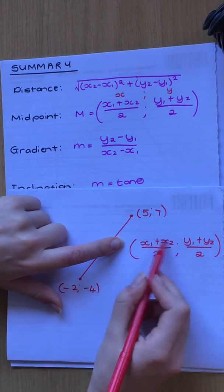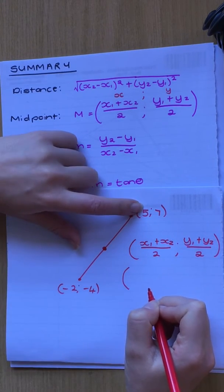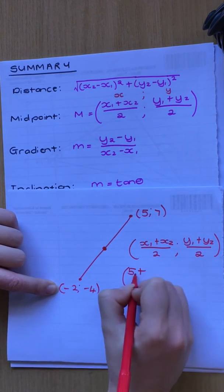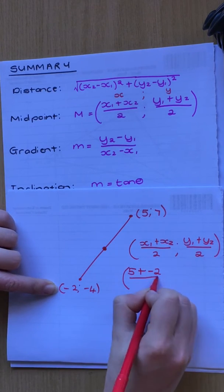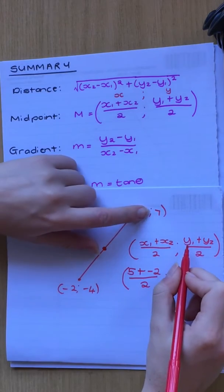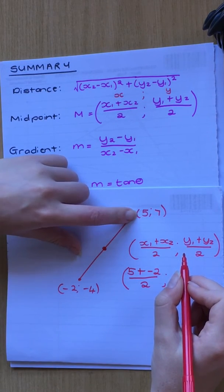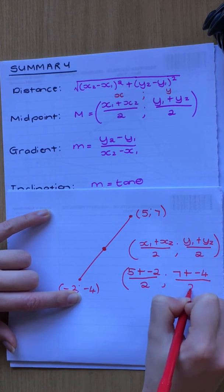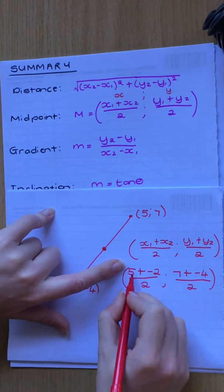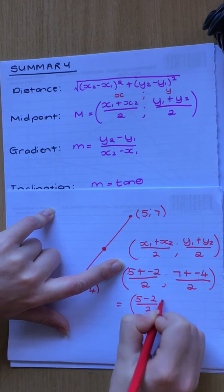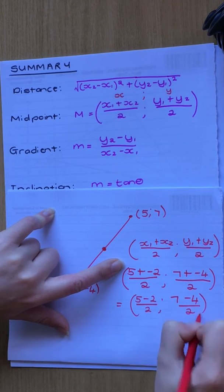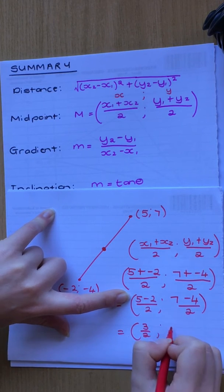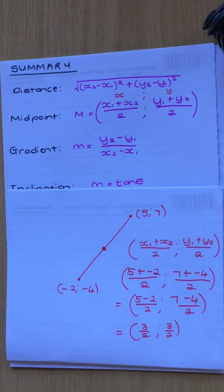So let's work this out. Let's say this is x1, so it's going to be 5 plus x2 which is negative 2, and plus minus 2 just becomes minus 2, all over 2. Then y1 — I must go back to this point — so it'll be 7 plus negative 4, all over 2. This becomes 5 minus 2 over 2, and 7 minus 4 over 2, which is 3 over 2. So that would be your midpoint coordinate.